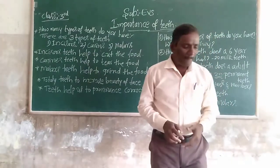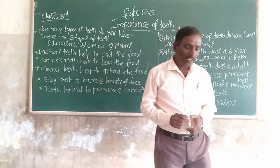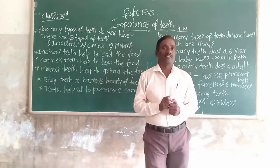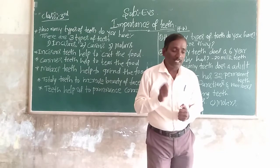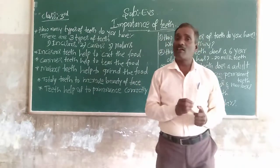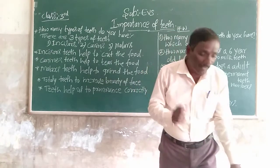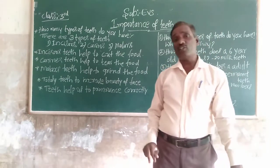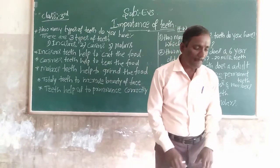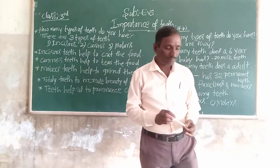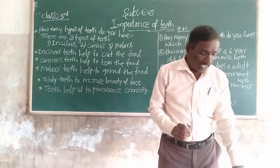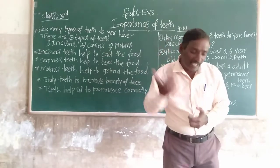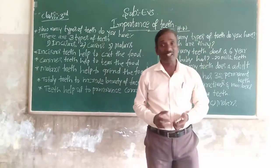The teeth that appear in children from 1 year to 6 years old are called milk teeth. They start falling from around 7 to 8 years of age, and new teeth will appear in their place.